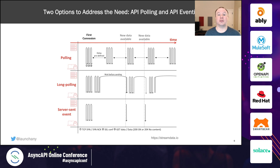In the past, we've had two primary options: API polling and API eventing. Polling is where we spend time checking an API and making requests to see if the data has changed. Long polling is a secondary version of that where we stay connected to a server for a longer period of time, allowing the server to send updates without having to make new connections.